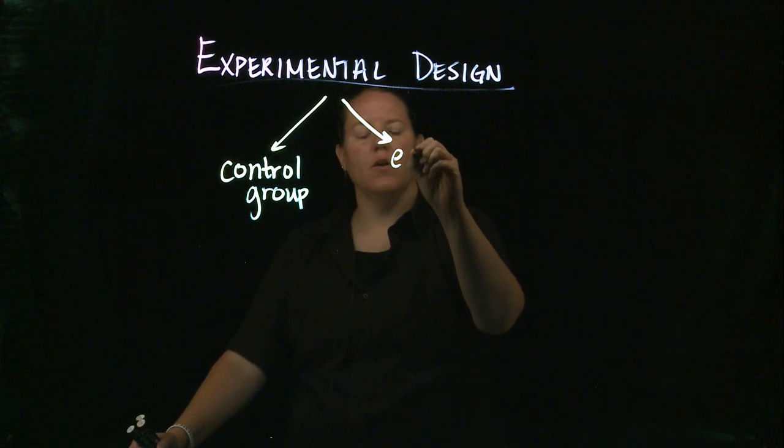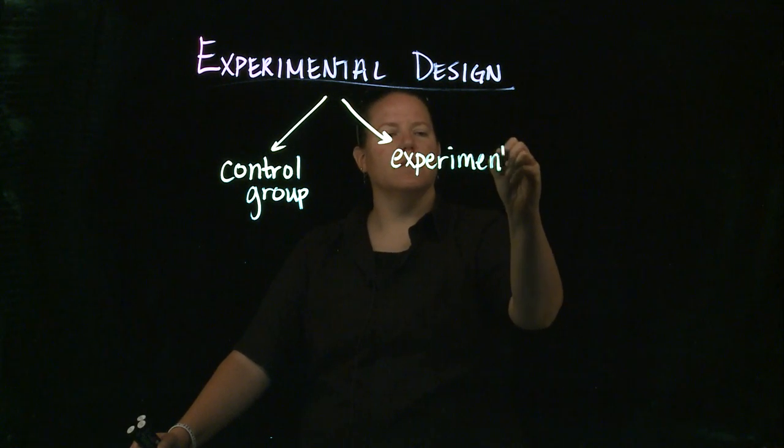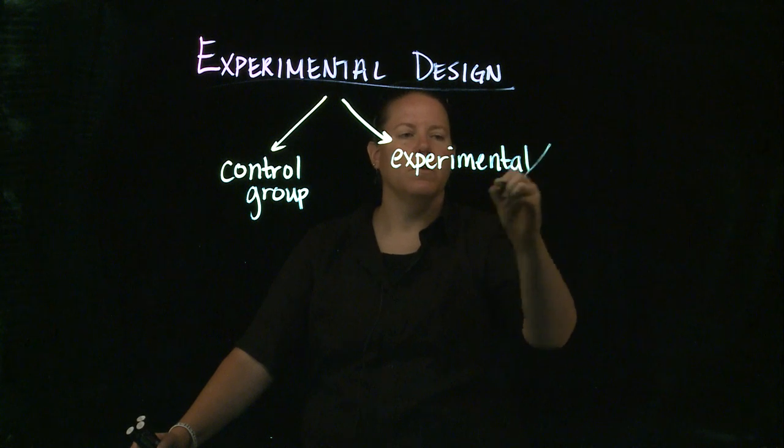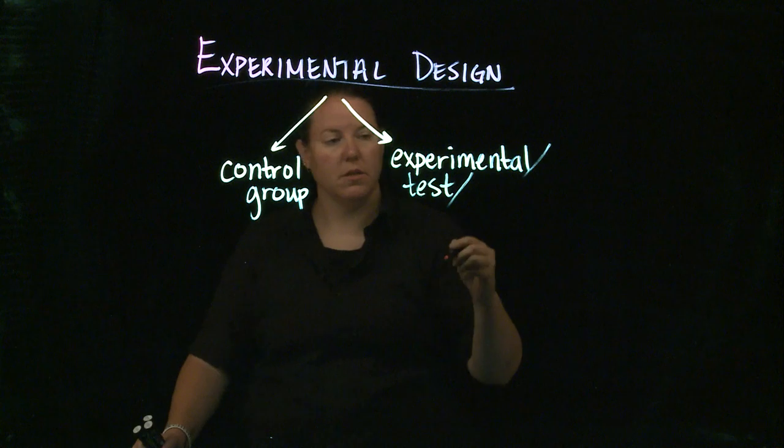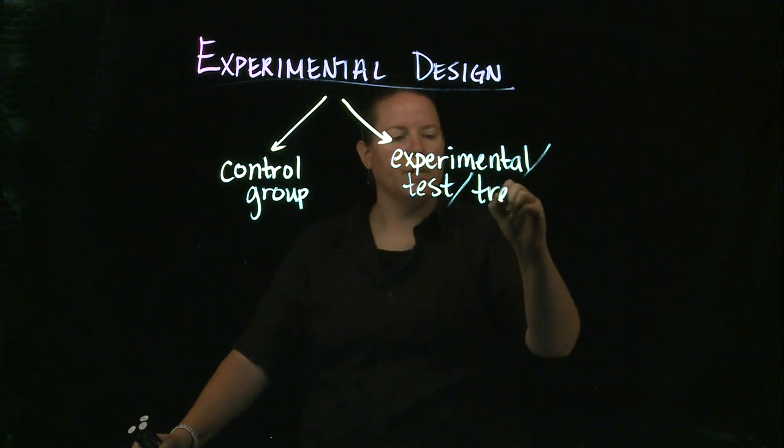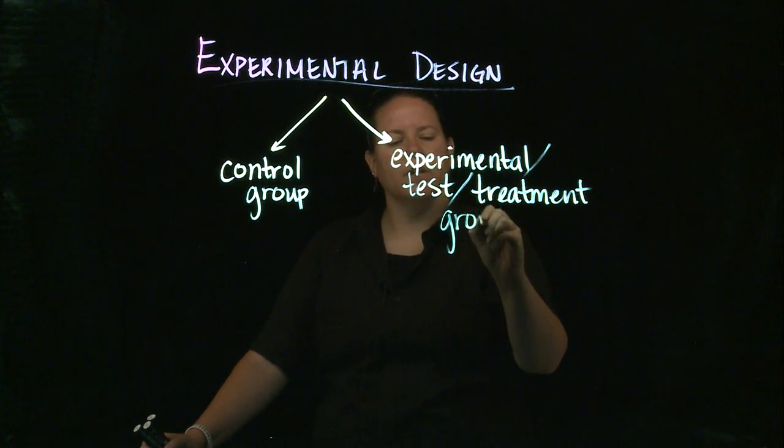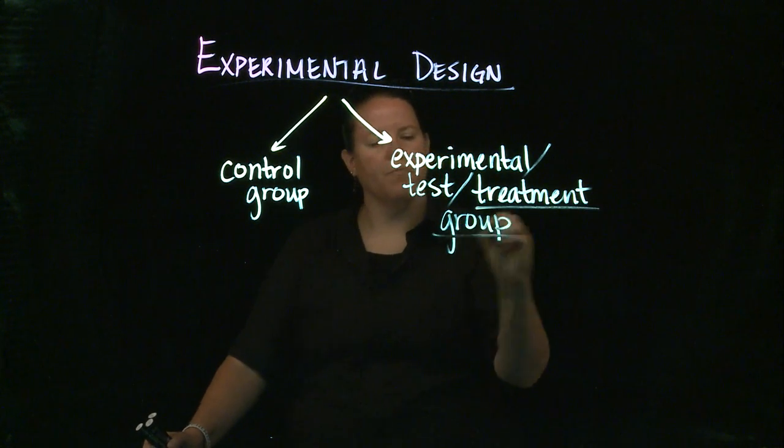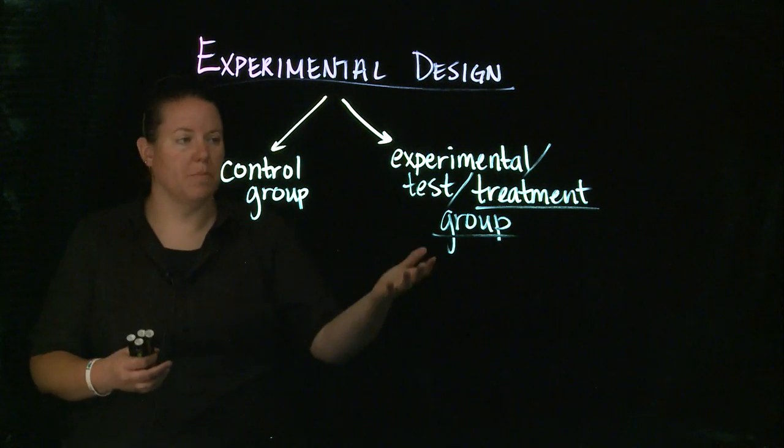And here the group that we actually experiment on can be called lots of things. It can be called the experimental group, it can be called the test group or test subjects, or it can be called the treatment group. That's the most often connotation, treatment group, because this is the group that you're actually going to do something to.